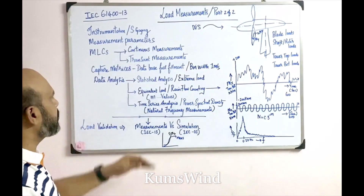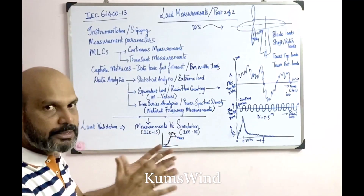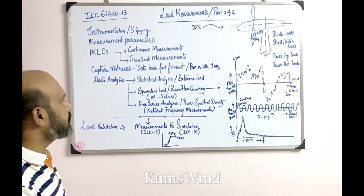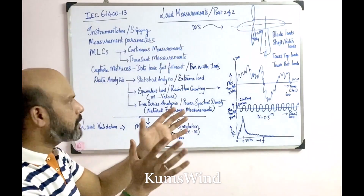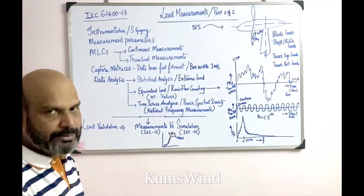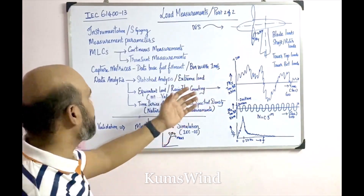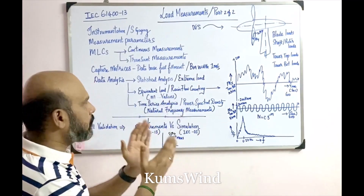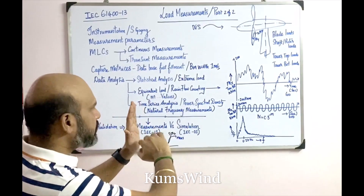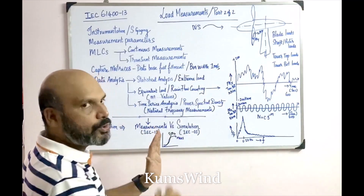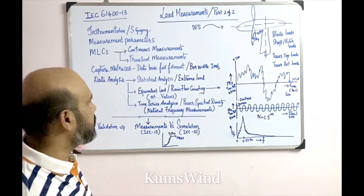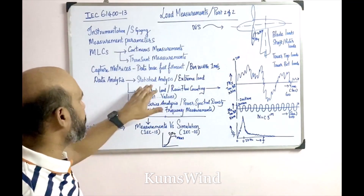Once sufficient data is confirmed for both continuous and transient measurements, data analysis begins. Load measurement analysis covers three directions: statistical analysis, equivalent load analysis, and time series analysis. Statistical analysis involves plotting scatter plots or pin graphs of mechanical parameters — wind speed versus edgewise bending moment, flatwise bending moment, shaft loads, tower loads — from lowest to highest wind speed, giving a statistical spread of mechanical parameters.